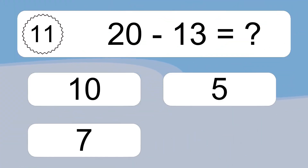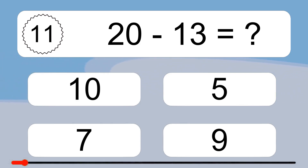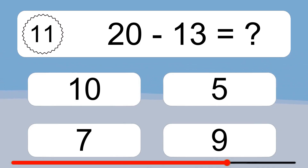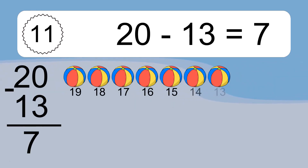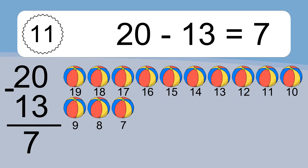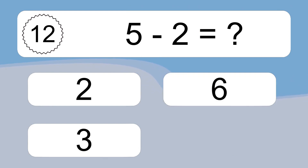20 minus 13 equals what? 20 minus 13 equals 7. Let's count it. 19, 18, 17, 16, 15, 14, 13, 12, 11, 10, 9, 8, 7.